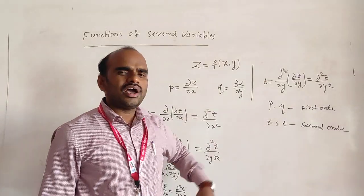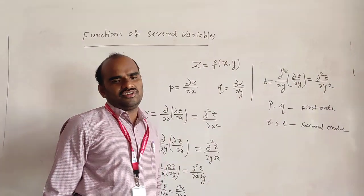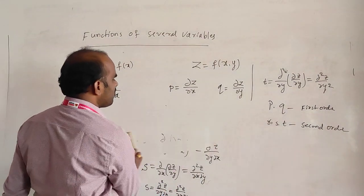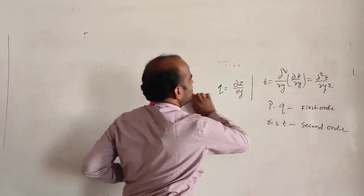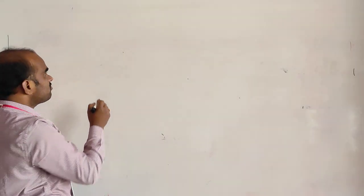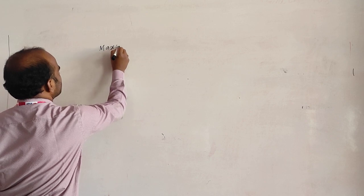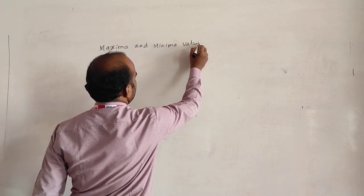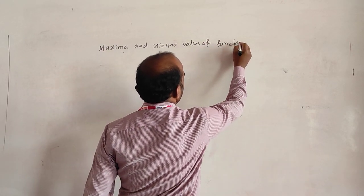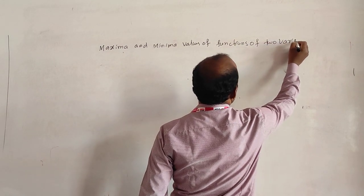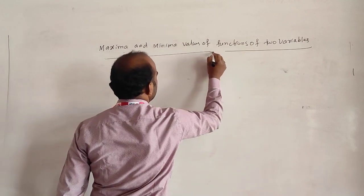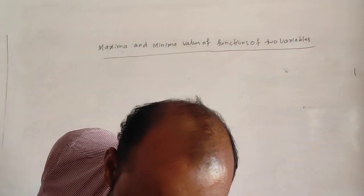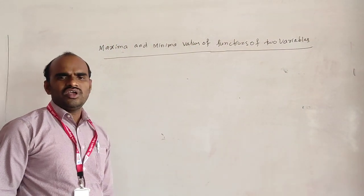The same concept can be extended to third and higher orders as well. This covers partial differentiation of first and second orders. Now I will explain how to find out the maximum and minimum values of functions of two variables. Roughly I will first explain how to find maximum and minimum values of functions of a single variable.